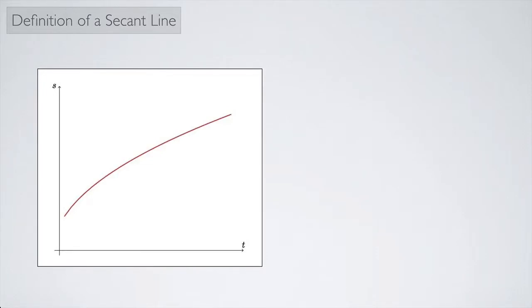Consider a particle that's moving in one dimension—that means it's just moving along a line in the same direction—and we have a graph of its position versus time shown here.